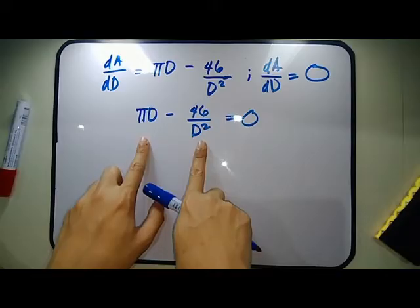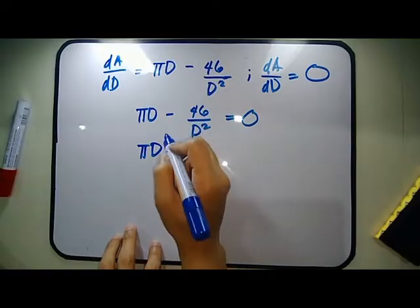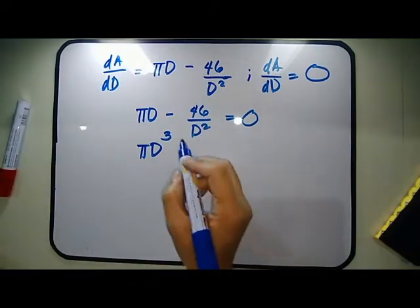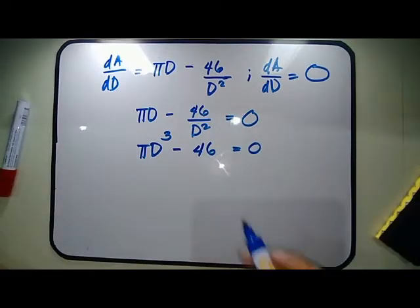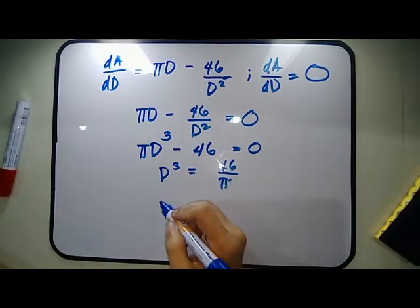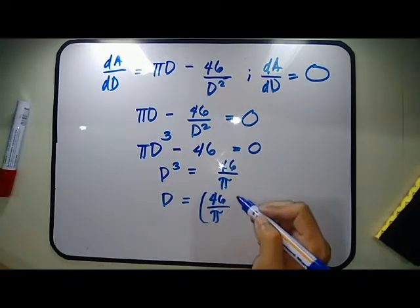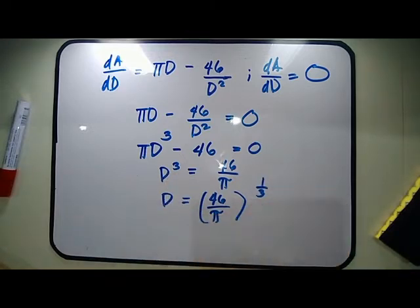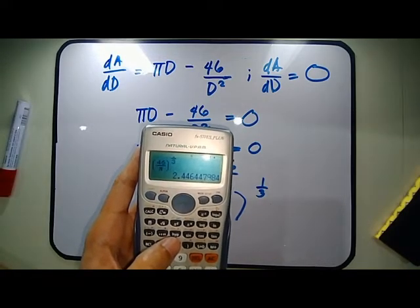To solve for d, multiply both sides by d²: πd³ − 46 = 0, so d³ = 46/π. Therefore, d equals (46/π) raised to the power of 1/3. Raising both sides by 1/3 to cancel the cube, the final answer is d equals 2.446 meters.